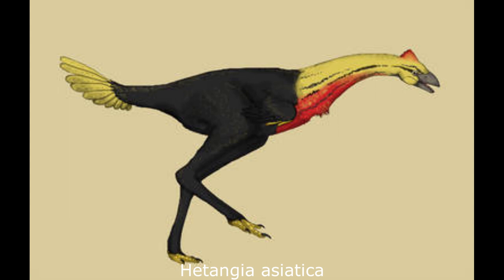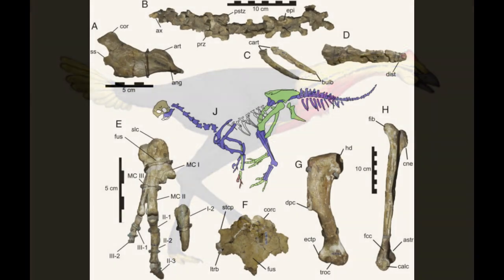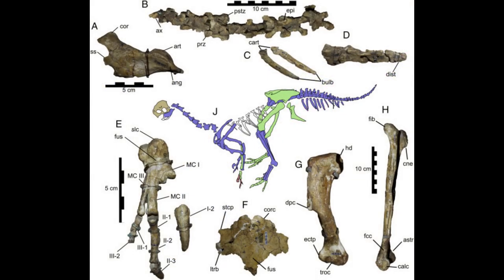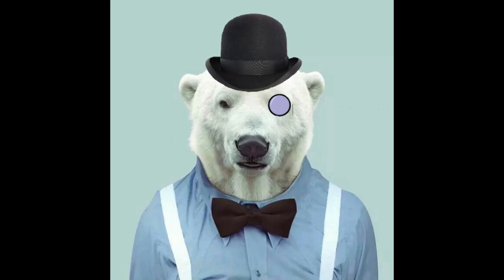Hetangia asiatica was a rather typical Eocene Avimimid from the Ypresian stage of the Lingcha Formation, China, known from a single fragmentary specimen consisting of hind limb elements, tail vertebrae and roughly half of the torso without the head and neck. From these remains, we can confidently state that Hetangia was a 2-meter-long cursorial omnivore/herbivore, with long legs, short forelimbs and a stubby tail. This overall form would remain consistent for Avimimids throughout the Eocene and into the early Oligocene.